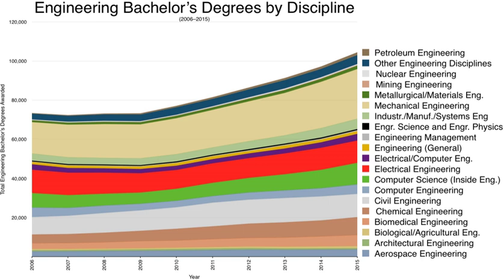Engineering training in South Africa is typically provided by the Universities, Universities of Technology and Colleges for Technical and Vocational Education and Training. The qualifications provided by these institutions must have an Engineering Council of South Africa accreditation for graduates and diplomats to be registered as Candidate Certificated Engineers, Candidate Engineers, Candidate Engineering Technologists and Candidate Engineering Technicians.